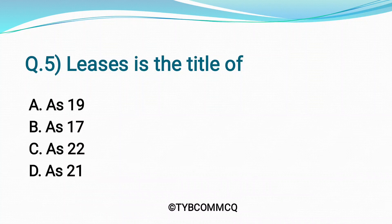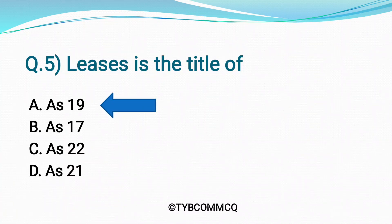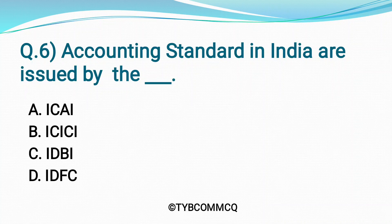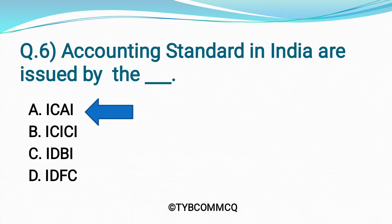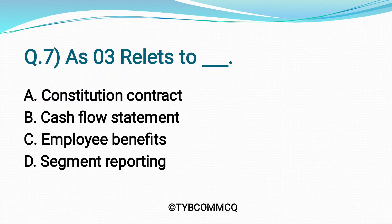Question Number 5: Leases is the title of — Option A: AS19, Option B: AS17, Option C: AS22, Option D: AS21. Yes, AS19 is the correct answer.